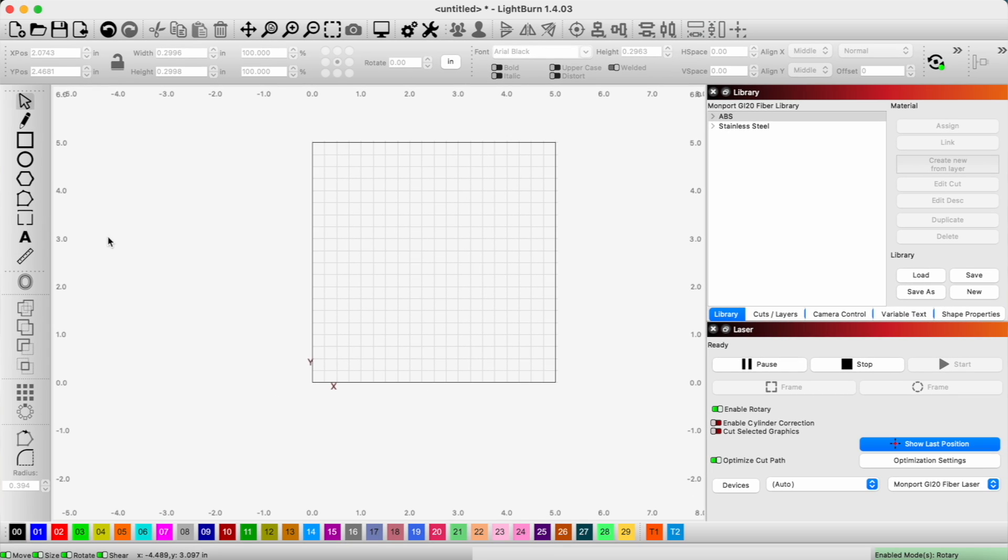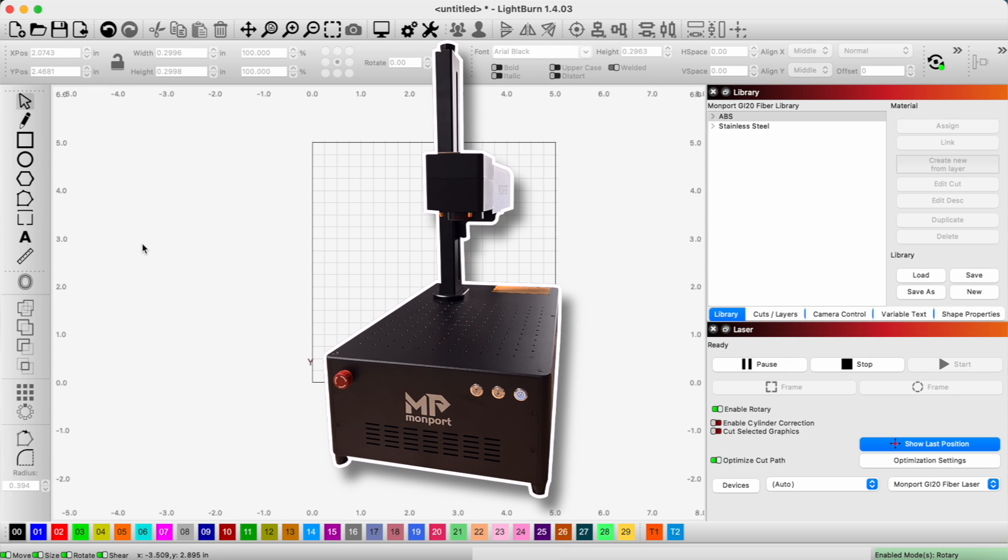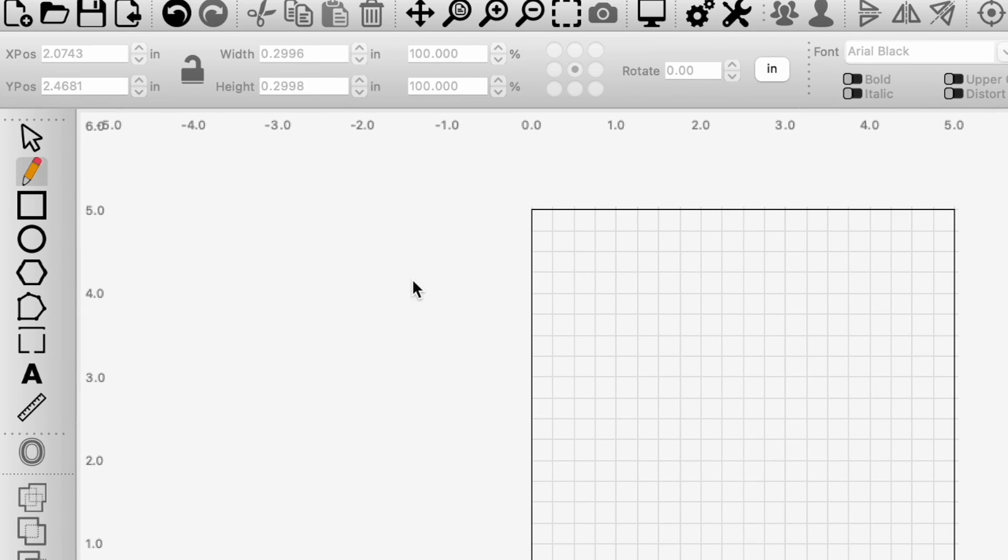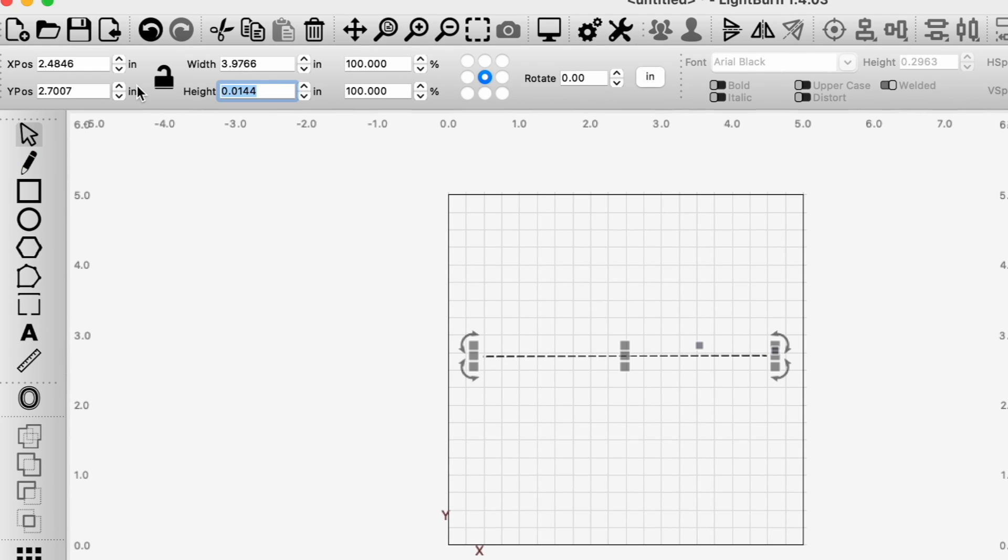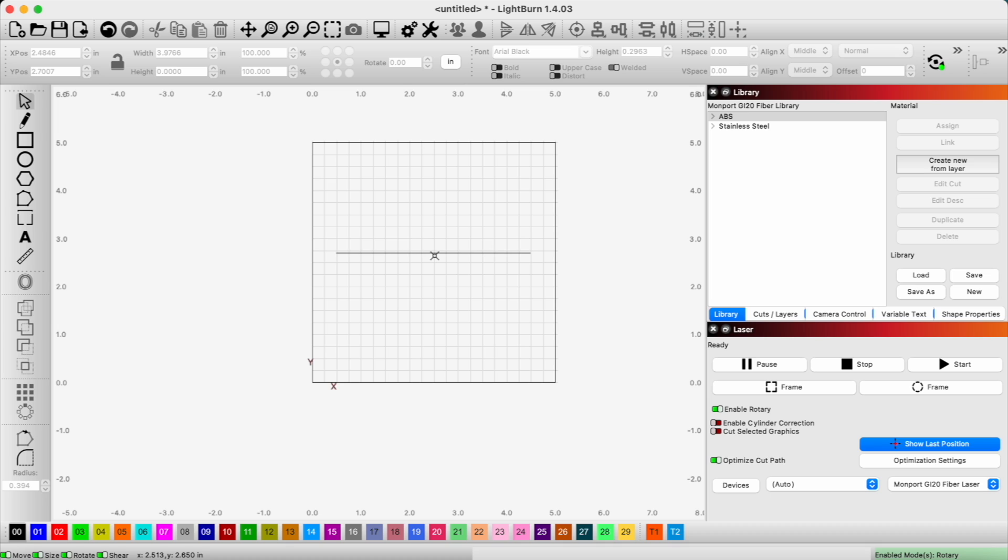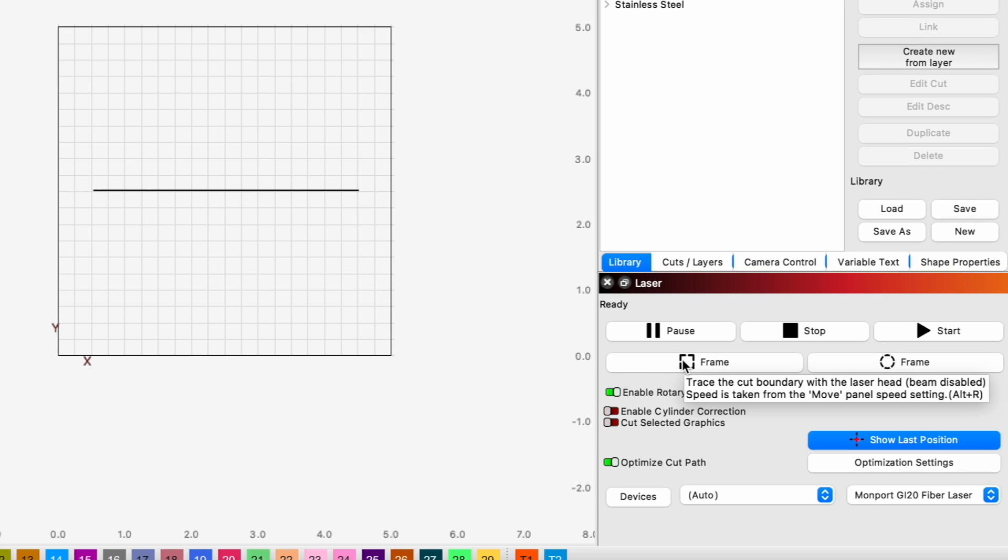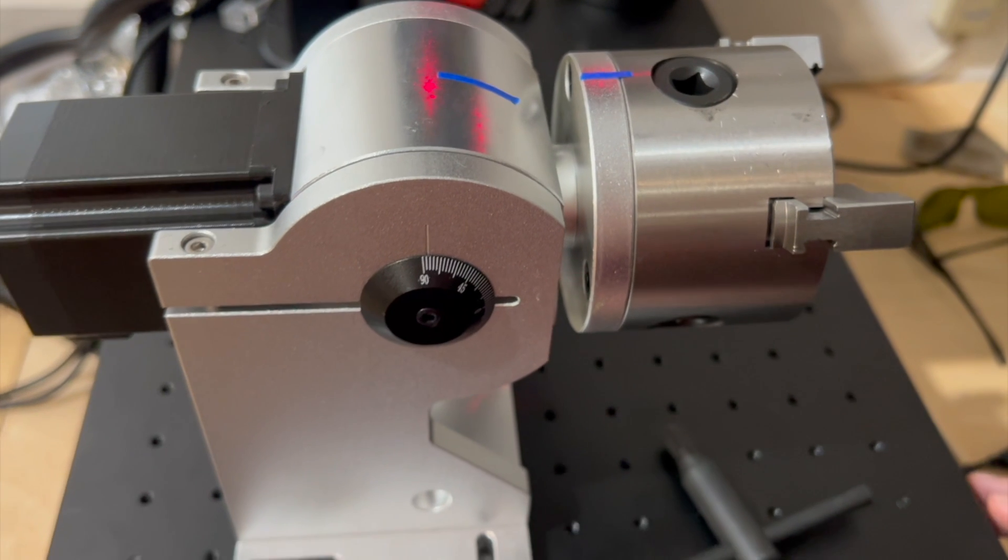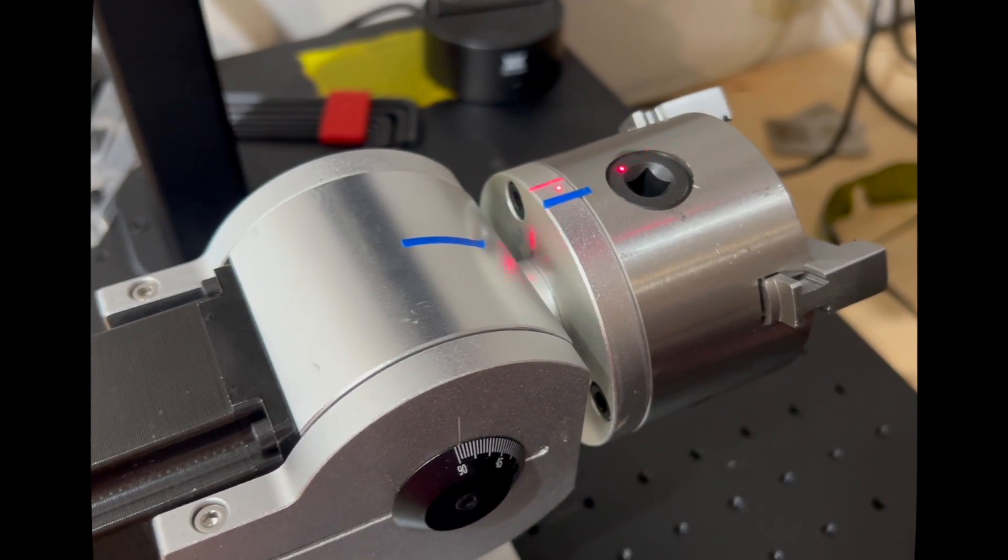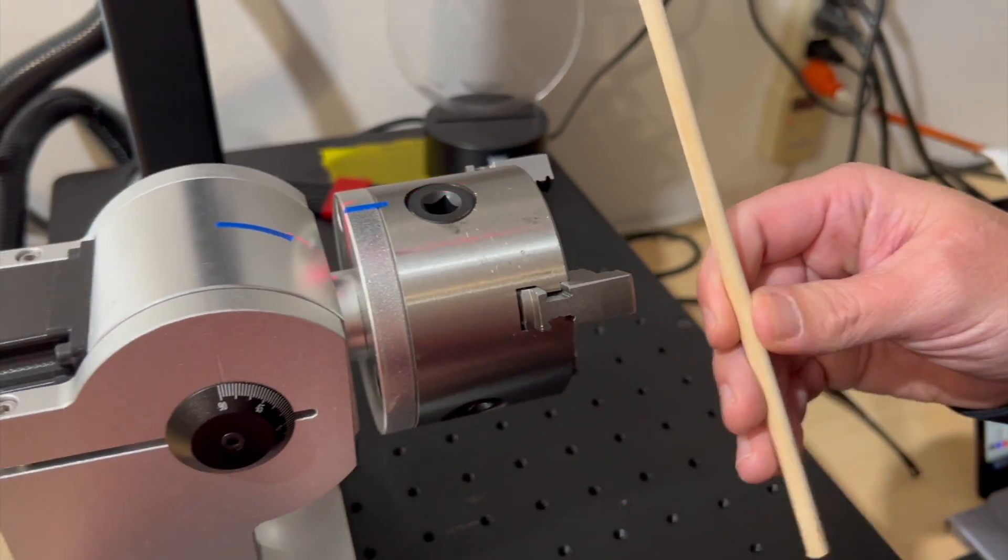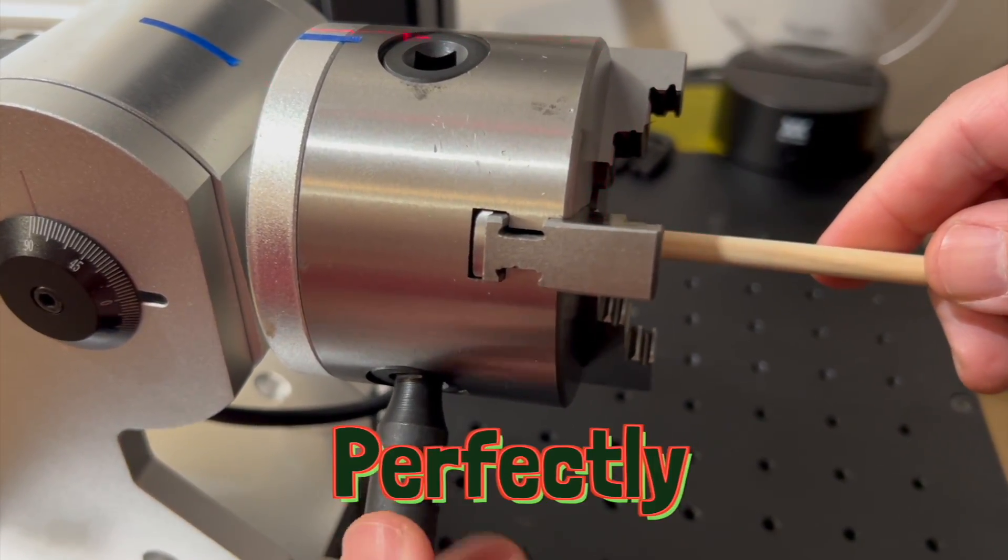So the next part of the setup is we need to make sure our laser is aligned with our chuck and what we're going to be putting in it. So in order to do that, we're just going to draw a line. And I'm going to make sure that's perfectly flat and I'm going to place it in the middle. And now I'm going to basically project this line by doing a frame to see where it lines up on my chuck. I'm going to raise this up. So I'm just going to use this dowel so I can line up that line so I can make sure I'm perfectly centered.